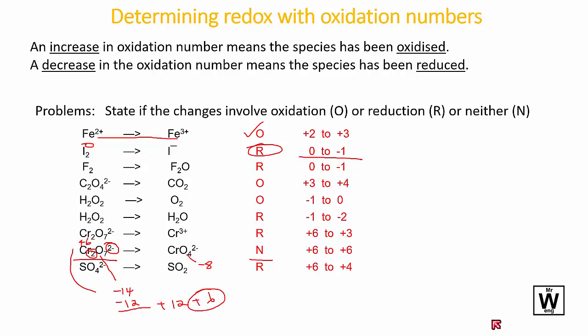Here we have a minus 8 overall, and we want minus 6 from each of the chromiums. There's only one of them, so that's just a plus 6. So there's no change there.